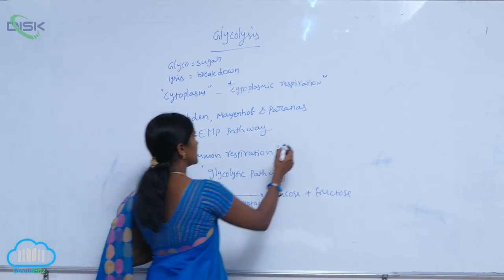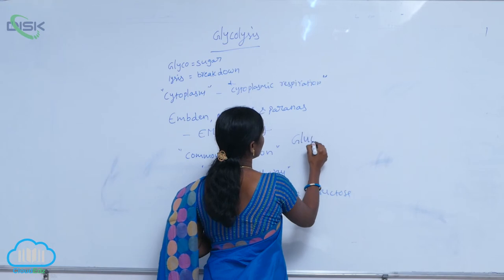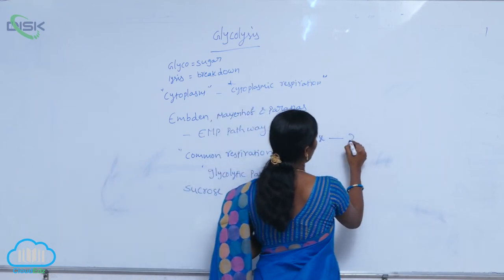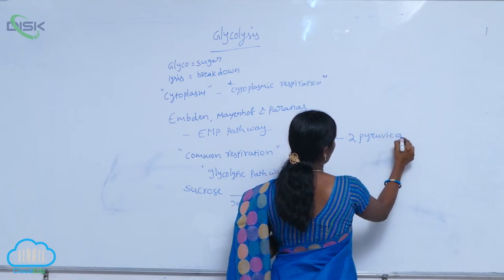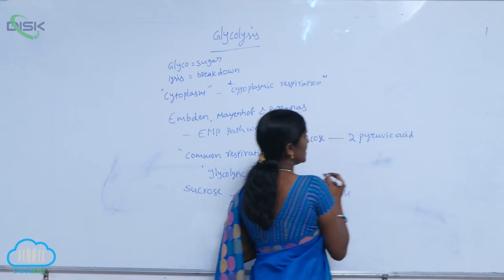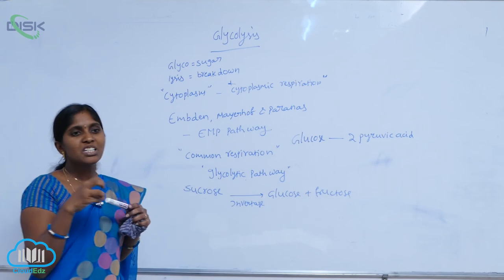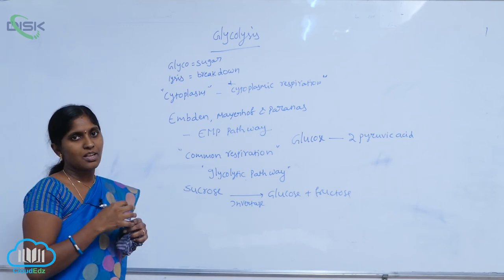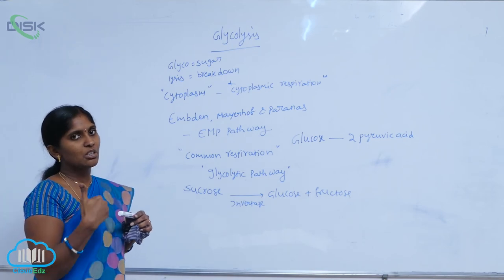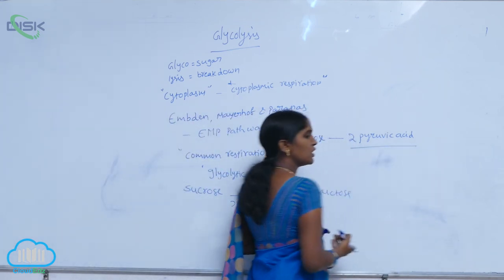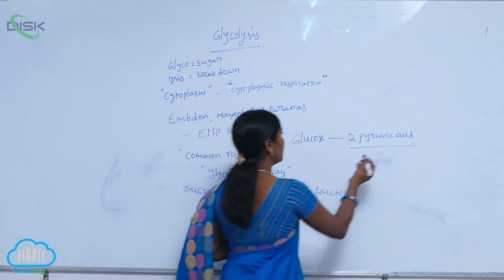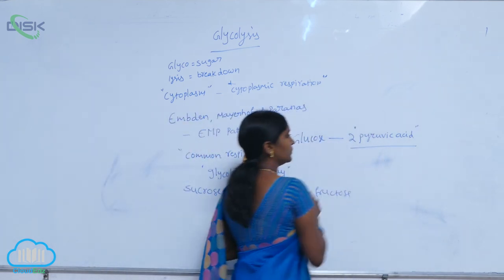The glucose is converted into two pyruvic acid molecules. It means the glucose undergoes partial oxidation. The partial oxidation of glucose results in the formation of two molecules of pyruvic acid.